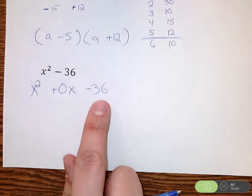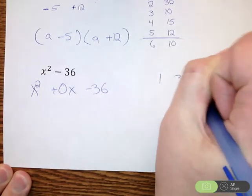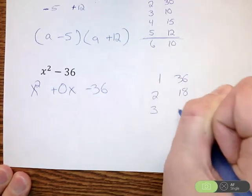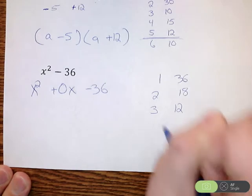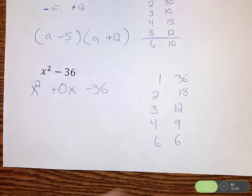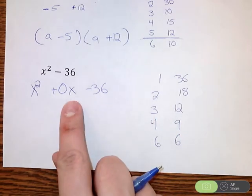So I'm looking for two numbers that multiply to negative 36 but add to 0. That's numbers like 1 and 36, 2 and 18, 3 and 12, 4 and 9, 6 times 6. So I'm thinking which pairs of these numbers will multiply to give me negative 36, but when I add them together, I get 0.